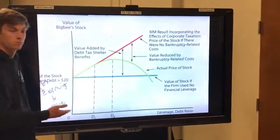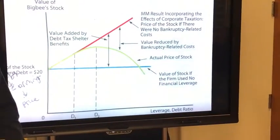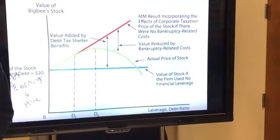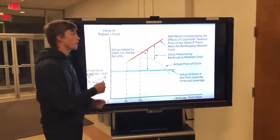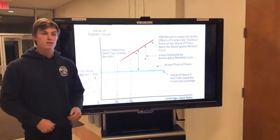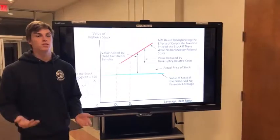The first line you want to look at is this blue line, which shows the value of that company's stock if there was no leverage added. This means no matter how much debt a company has, the price would not change because there is no leverage.